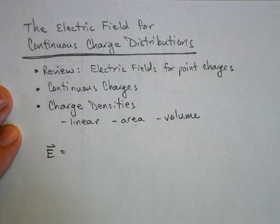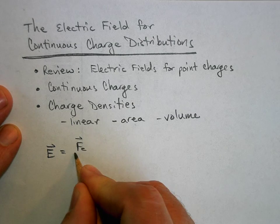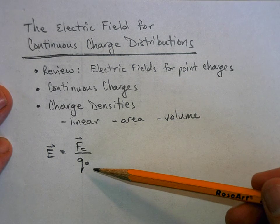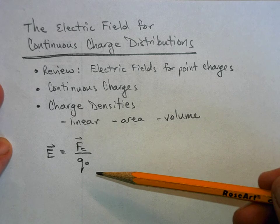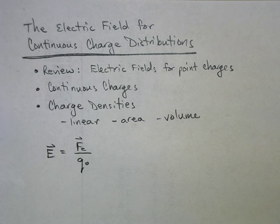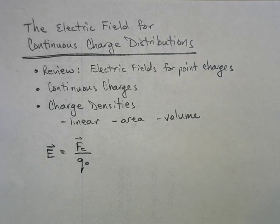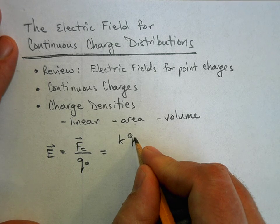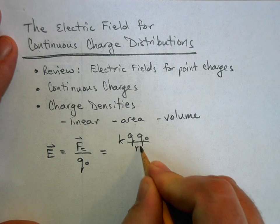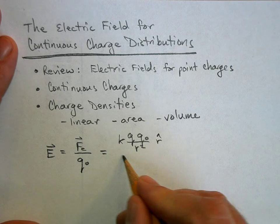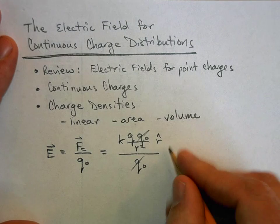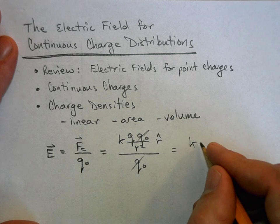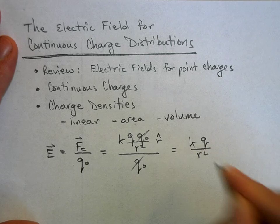Remember, the electric field is equal to the electric force divided by some test charge — a positive charge. So really what we're doing is asking: at some location in space, what force is an electric charge going to feel? For a point charge, it was k·q·q₀ over r² in the r-hat direction — that's Coulomb's law — divided by q₀. The q₀ cancels and we get k·q over r².